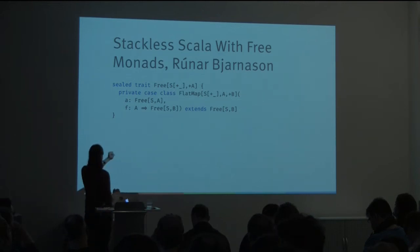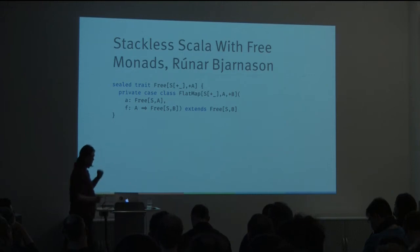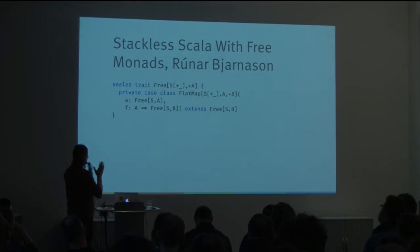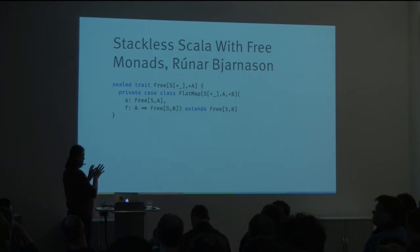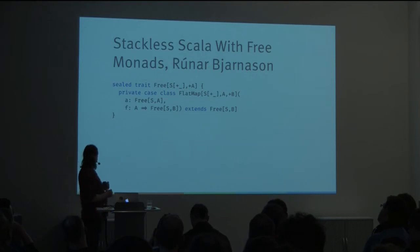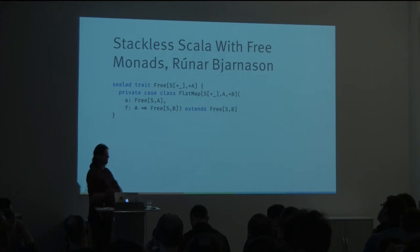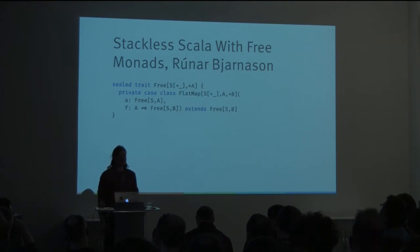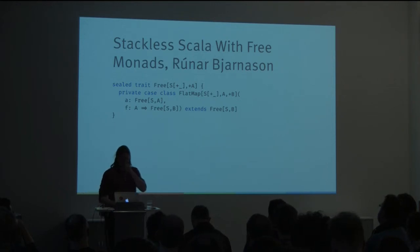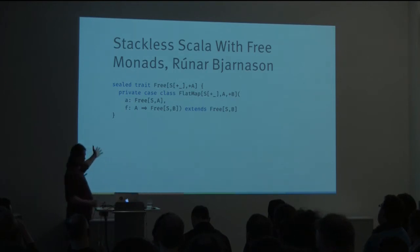To work around that problem, he writes this. What's happening here is this introduces a data constructor called FlatMap, which has the exact same type signature as the flatMap operation, but it's nested as a hidden data constructor inside the free monad. Whenever you're calling the flatMap operation, instead of trying to calculate the result, he's lifting it up into the type and constructing this thing on the heap instead of on the stack. By doing that, this operation becomes stack safe because it doesn't use the stack — it uses the heap.